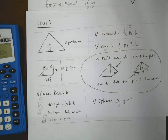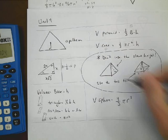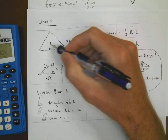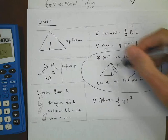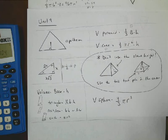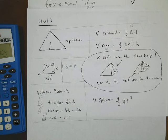That does it for our review of Unit 9. Make sure you have notes to review so you can memorize the formulas. Don't forget what an apothem is, your special triangles, and be careful about slant heights versus tent poles to make sure you use the right thing. Good luck.